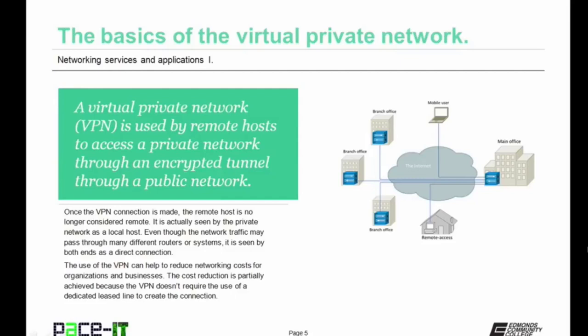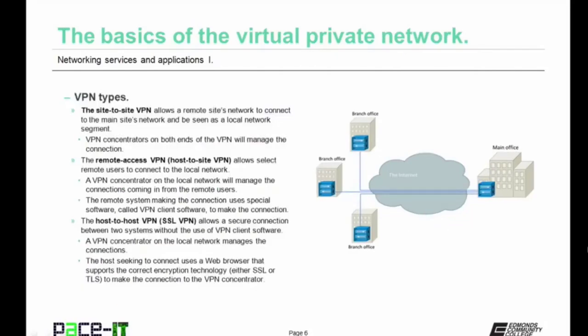Even though the network traffic may pass through many different routes or systems, it's seen by both ends as being a direct connection. The use of the VPN can help to reduce networking costs for organizations and businesses. The cost reduction is partially achieved because the VPN doesn't require the use of a dedicated leased line to create that direct connection. There are several different types of VPNs.